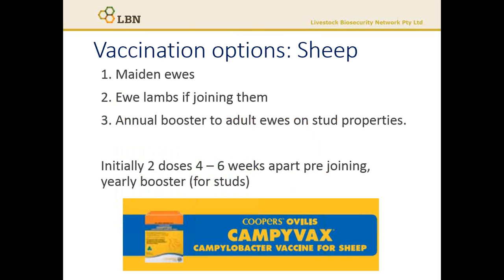For vaccination in sheep, strategies include vaccinating your maiden ewes, vaccinating your ewe lambs if you're going to keep them and join them, or an annual booster to adult ewes and ewe lambs on stud properties. However, in a commercial enterprise, this is likely to be uneconomical. The vaccination protocol is similar to cattle — initially two doses four to six weeks apart pre-joining, and then a yearly booster, particularly in your stud animals.